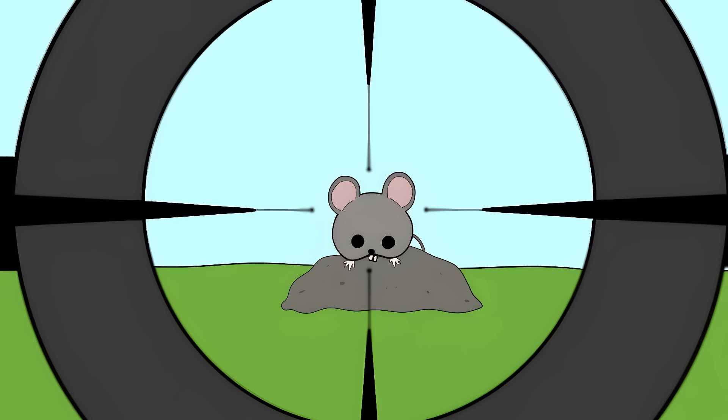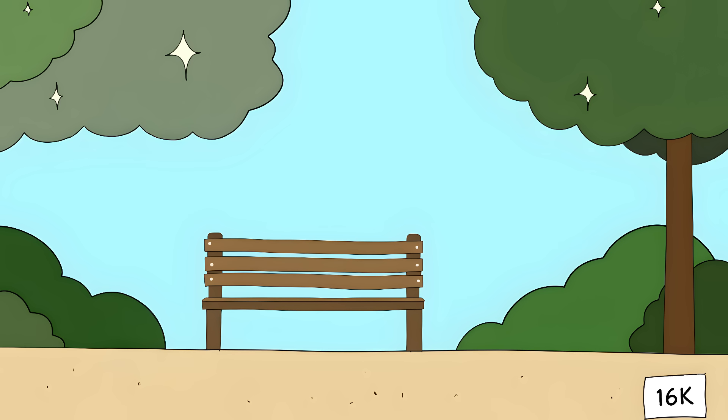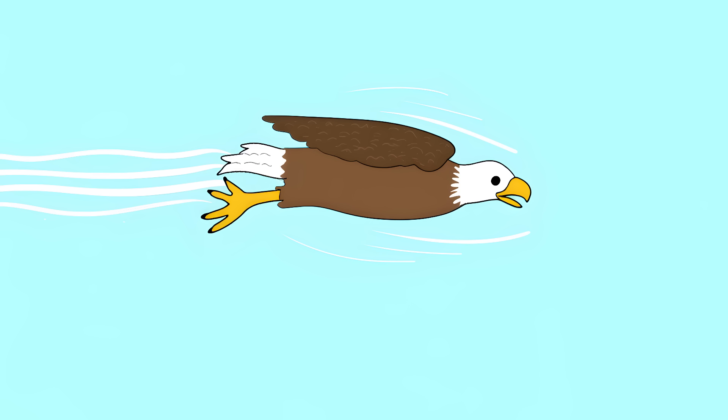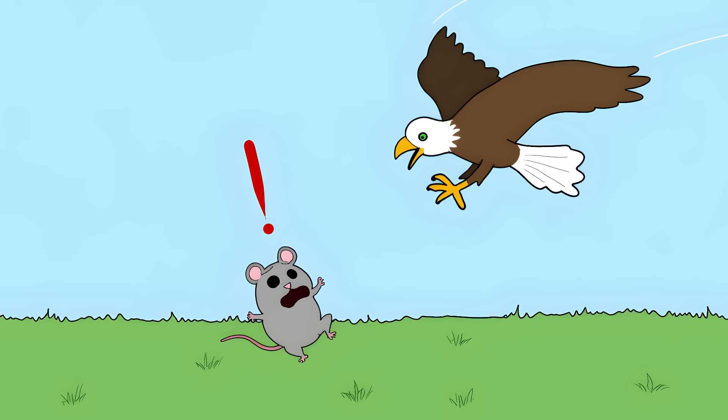Every mouse that thinks it's being sneaky, every fish that thinks it's safe just because it's underwater, every tiny movement is tracked by the eagle's built-in targeting system. And they use this superpower vision while diving at speeds faster than your car on the highway. Imagine trying to thread a needle while skydiving. That's basically what eagles do when they hunt, except they never miss.